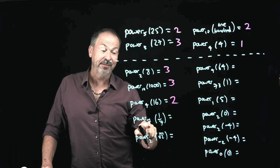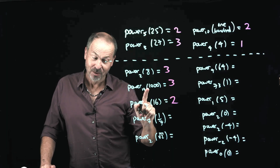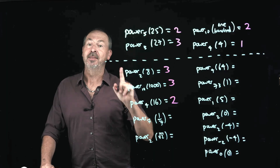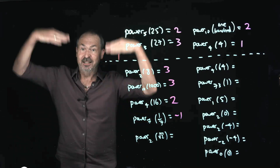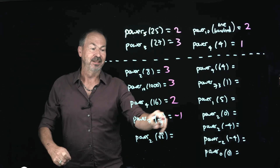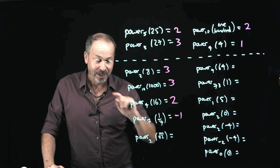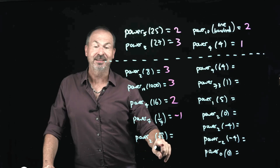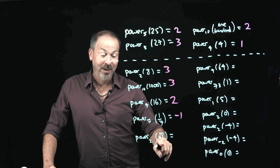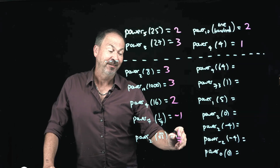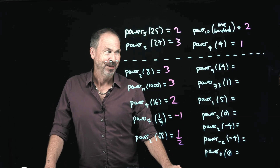The power of 7 that gives the answer 1/7 — exponent rules — that would be negative 1. 7 to the negative 1 is the reciprocal; anything to the negative 1 is the reciprocal. 7 to the negative 1 is 1/7. The power of 2 that gives the answer the square root of 2: 2 to the half gives me the square root of 2. Alright, we know our exponent rules.